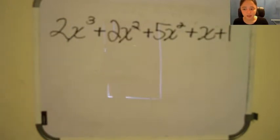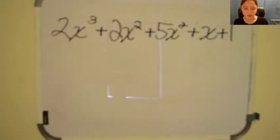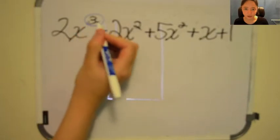Look at 2x cubed. The exponent of x is 3. There are no other terms with the exponent of 3, so that can't be added to any other term in the equation.